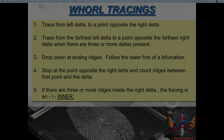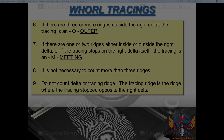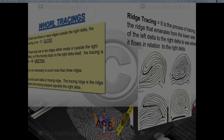When you reach the point near the location of the right delta, stop and draw an imaginary line going to the right delta, then start counting. If there are three or more ridges inside the right delta, the tracing is inner. If there are three or more ridges outside the right delta, the tracing is outer. If there are one or two ridges either inside or outside, or if the tracing steps on the right delta itself, the tracing is meeting. Do not count the delta or the tracing ridge itself — only the intervening ridges.